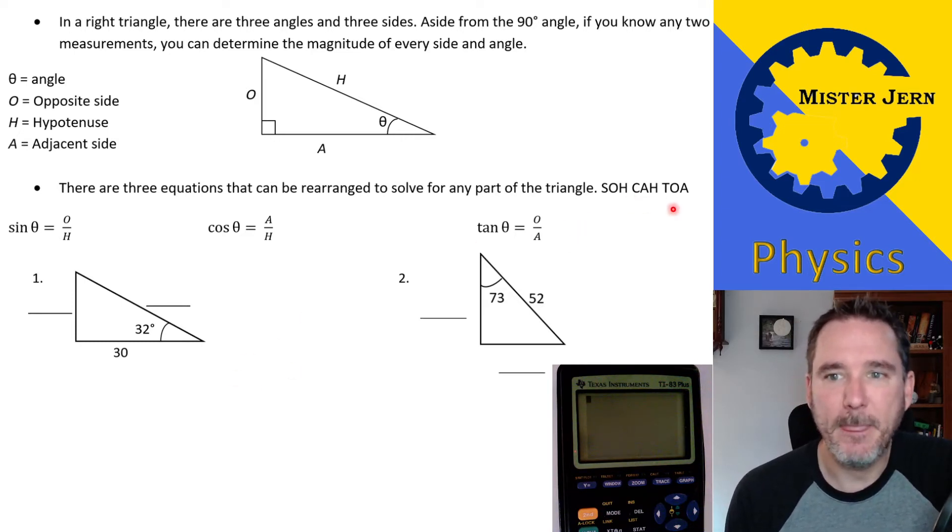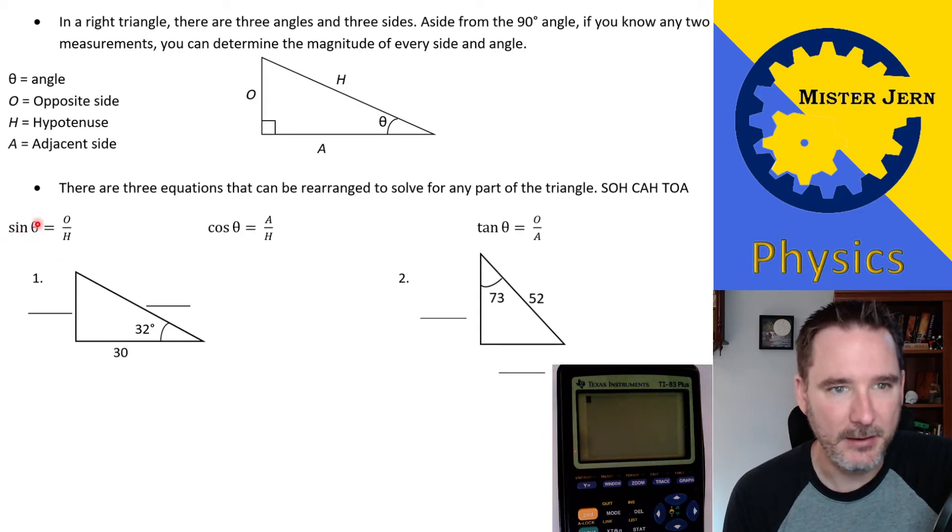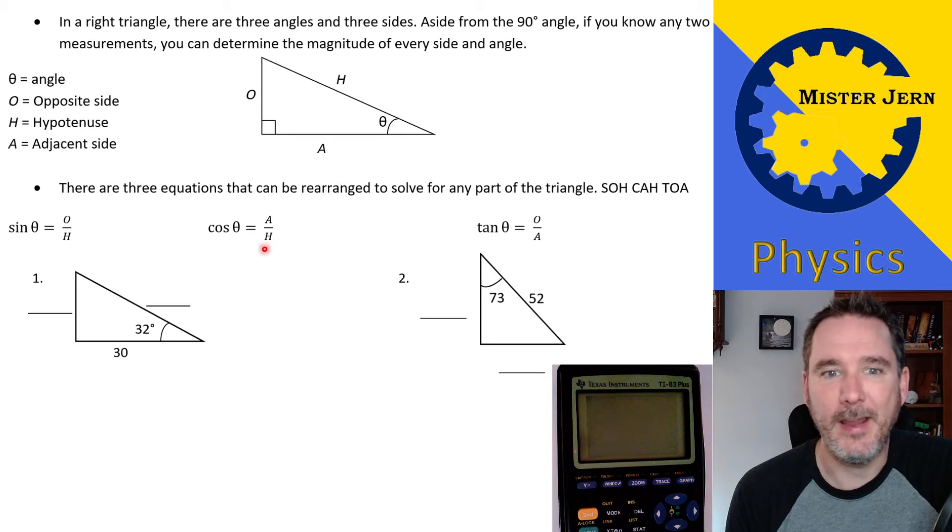SOHCAHTOA is just acronyms, and they stand for sine of the theta, so sine of the angle, is equal to the opposite over hypotenuse. That's your SOH. Then you've got CAH, which is the cosine of the theta is equal to the adjacent over the hypotenuse. And then you've got your TOA, tangent of the angle is equal to the opposite over the adjacent.